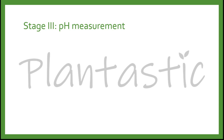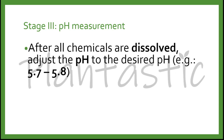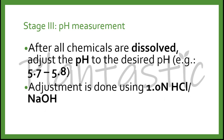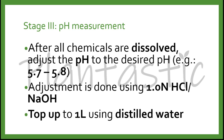After all the chemicals are dissolved, we adjust the pH to the desired level, which is commonly in the range of 5.7 to 5.8. The adjustment is done using 1.0 normality of hydrochloric acid (HCl) or sodium hydroxide (NaOH). Finally, after the adjustment is done, we top up to 1 liter using distilled water.